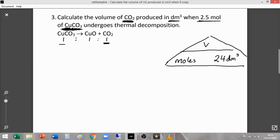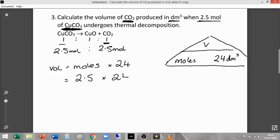In the question it states that we've got 2.5 moles. Therefore, we must have 2.5 moles of that as well. Our volume is going to be the moles times by, in this case, it's 24 because we're working in decimetre cubed, as requested in this question. The number of moles was 2.5. 2.5 times by 24 is 60. And the units of decimetre cubed.